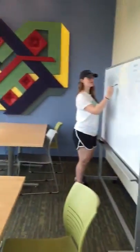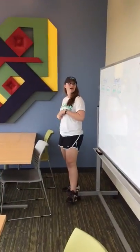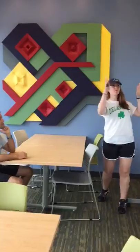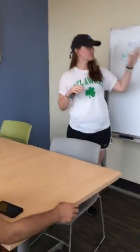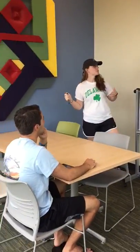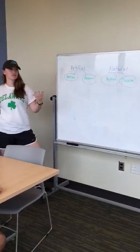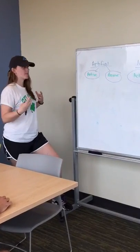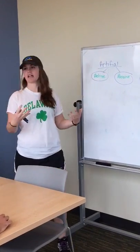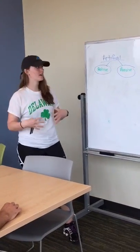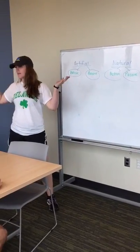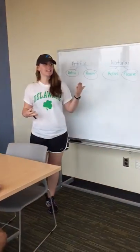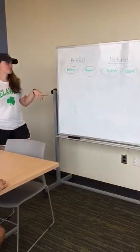Good afternoon class. Today we're going to talk about different types of immunity. We've got two broad categories: artificial versus natural immunity. Artificial immunity is when our bodies either develop or are given antibodies by an outside source. Natural immunity would be acquired by the environment or something that isn't artificial.